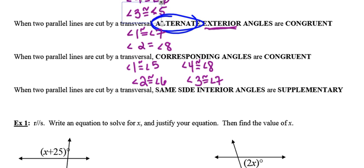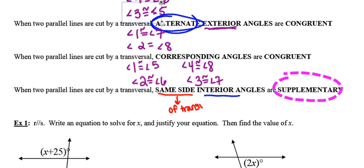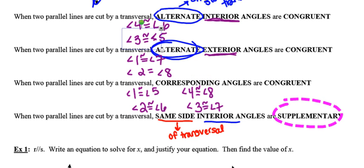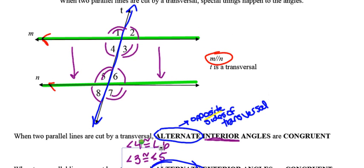The last relationship you need to be aware of is a little bit different. This one is same-side interior angles, and they are supplementary. Same side refers to the same side of the transversal, and interior means inside the parallel lines. So angles that are inside the parallel lines but on the same side of the transversal have to be supplementary. Angles three and six are both to the right of the blue transversal and inside the green parallel lines, making them same-side interior angles. Likewise, angles four and five are on the same side of the transversal and inside the parallel lines, making them same-side interior angles as well.